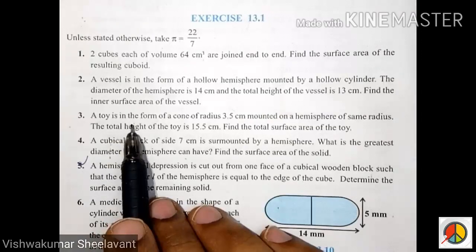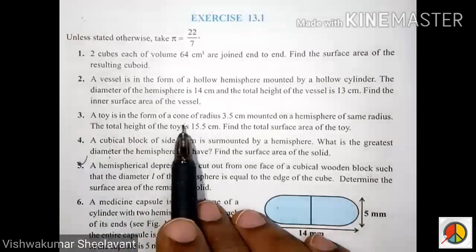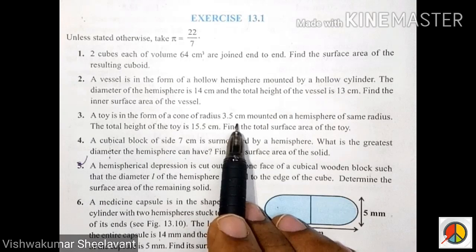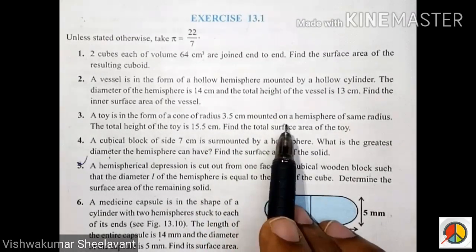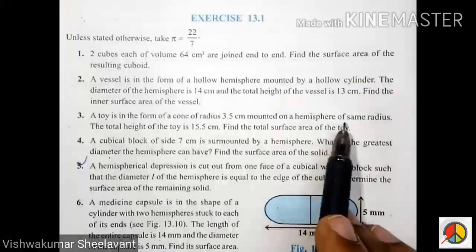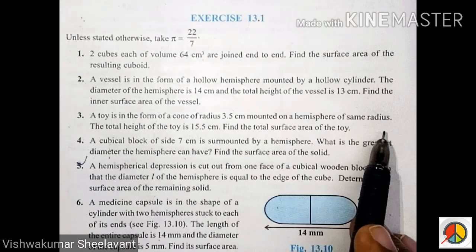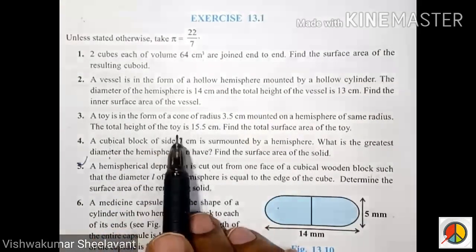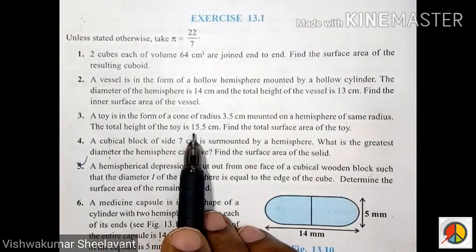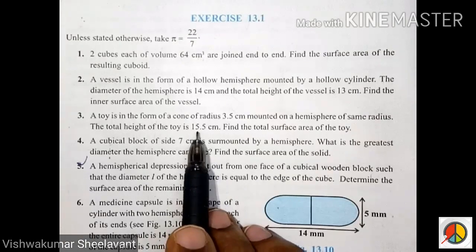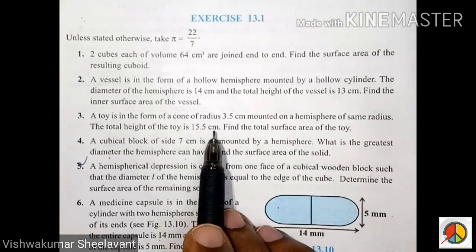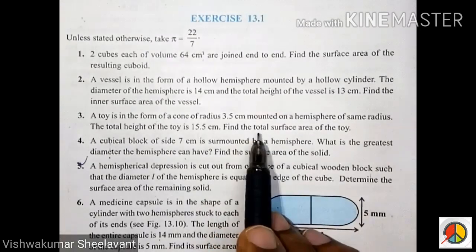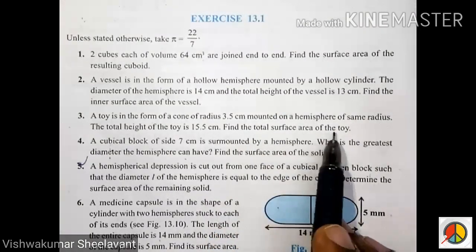A toy is in the form of a cone of radius 3.5 cm mounted on a hemisphere of the same radius. The total height of the toy is 15.5 cm. Find the total surface area of the toy.